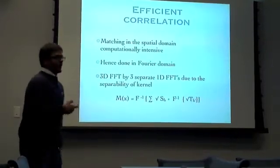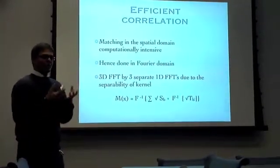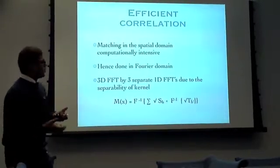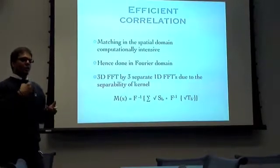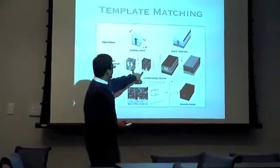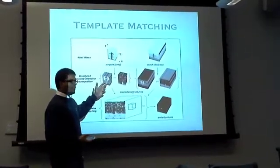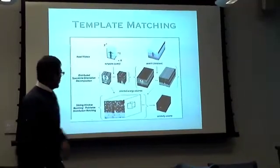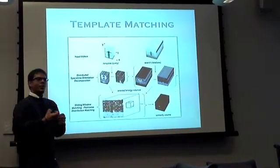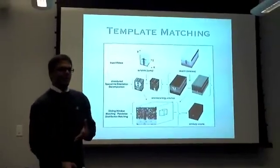Now, how do we do the correlation? Template matching is what we mean when we say correlation — looking at the amount of similarity between two signals, signal A and signal B. What we are doing here is correlation in the spatial domain. In the spatial domain, I would be calculating similarity between every pixel of my template video and every pixel of my search video. I'm moving this template around to find which part of my search video is most similar to my template video.